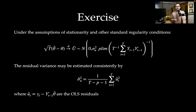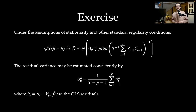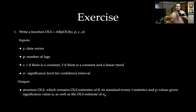Under the assumption of stationarity and other standard regularity conditions, one can show that the estimate is normally distributed, and we get this expression for the variance of this normal distribution, which we need to compute standard errors of our estimator. The residual variance can be estimated using the OLS residuals u-hat, simply by taking an average.